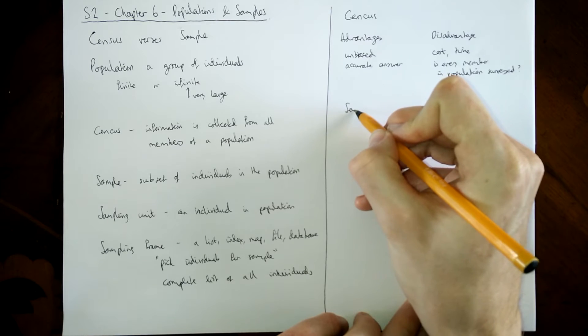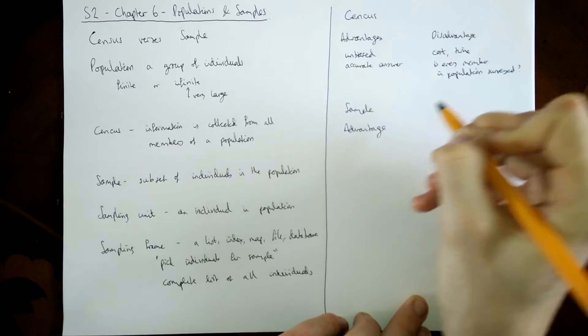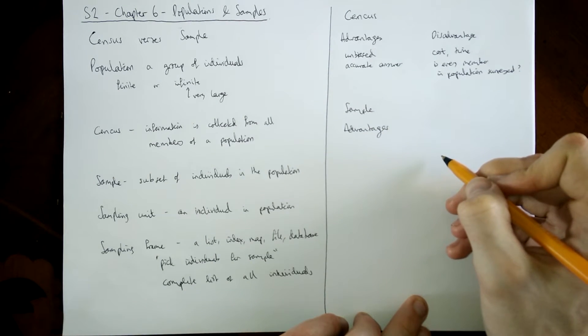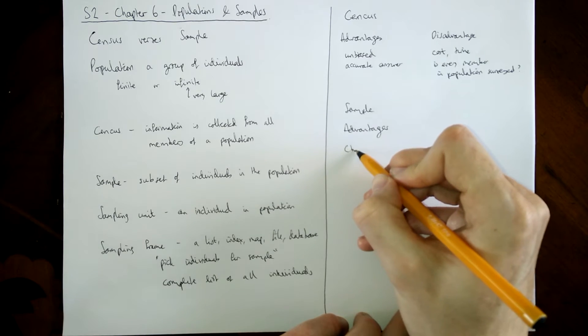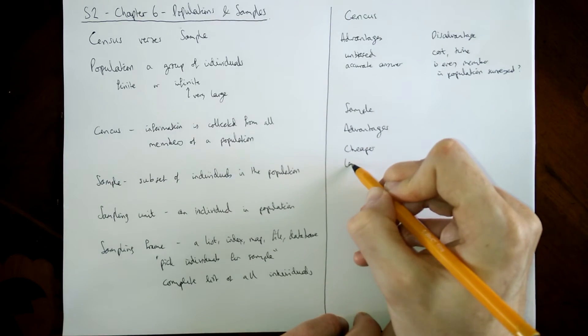What about if you had a sample? What are the advantages and disadvantages of that? The advantages of a sample is, well, it's cheaper because you haven't got to ask as many people. So you haven't got to spend much time doing it. So less time consuming.